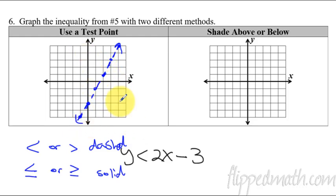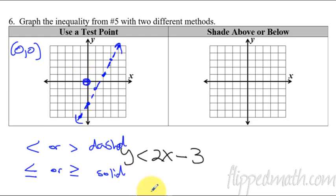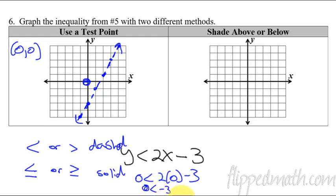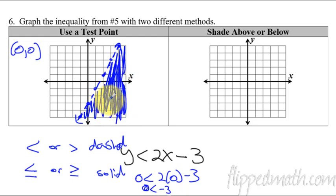So now how do we shade? One of these two sides of the line needs to be shaded. Here's how you use a test point — it's really nice if you can use 0, 0. So I'm going to plug in 0, 0 to check if this is within the solution. 0 is less than 2 times 0 minus 3. When you simplify that, you get 0 is less than negative 3. That is not true — 0 is not less than negative 3. So the origin is not part of the solution. I'm going to shade the other side.